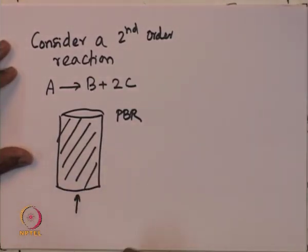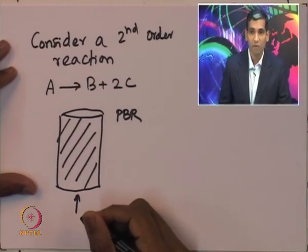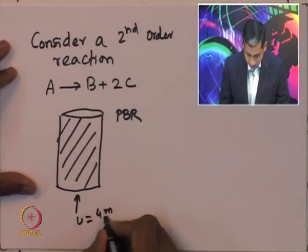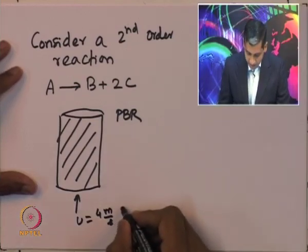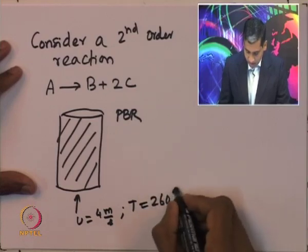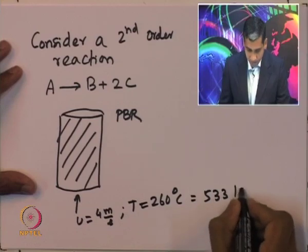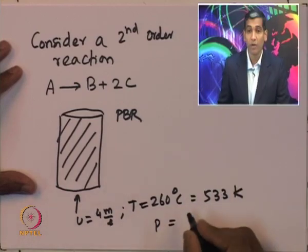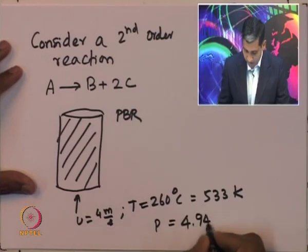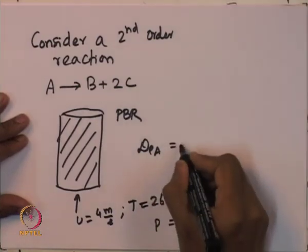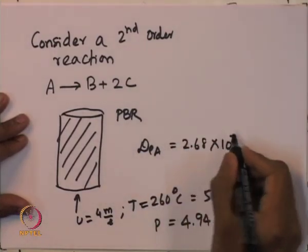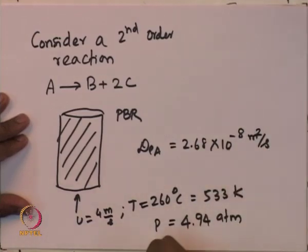The gas fluid feed stream is actually flowing at a superficial velocity of 4 meters per second. The feed temperature is 260 degree C, which is equal to 533 Kelvin. The pressure at which the fluid is flowing into the stream is 4.94 atmospheres. The diffusivity of the species - effective diffusivity - is given by 2.68 into 10 power minus 8 meter square per second.